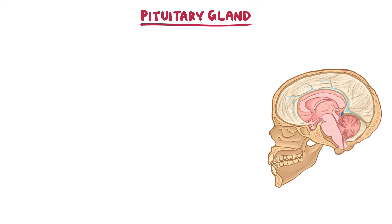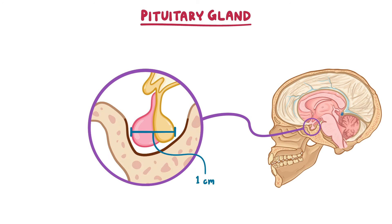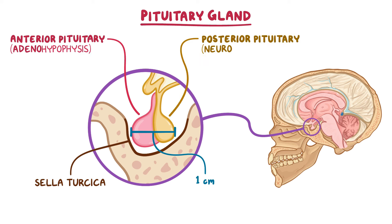The pituitary gland is a small gland with a diameter of approximately 1 cm. It sits within a saddle-shaped bone cavity called the sella turcica, at the base of the brain. The gland is divided into two main parts: the anterior pituitary or the adenohypophysis, and the posterior pituitary or the neurohypophysis. Each part originates from different embryological sources, which is reflected in their different structure and function.